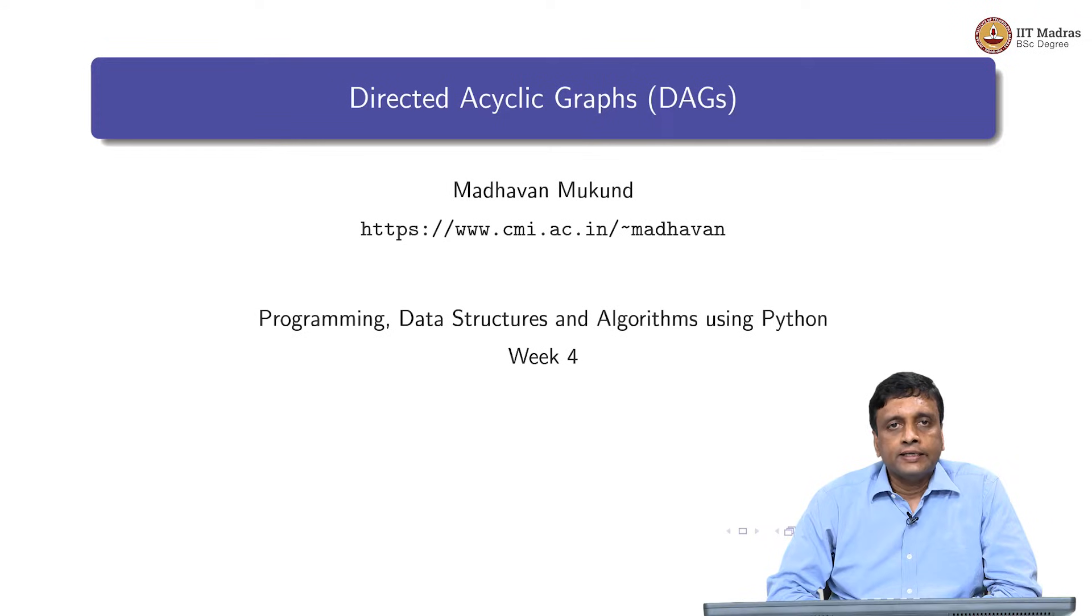We saw that we can use BFS and DFS to detect cycles in a graph. In an undirected graph, we just look for non-tree edges. And in a directed graph, we use the DFS numbering in order to look for back edges and find cycles.